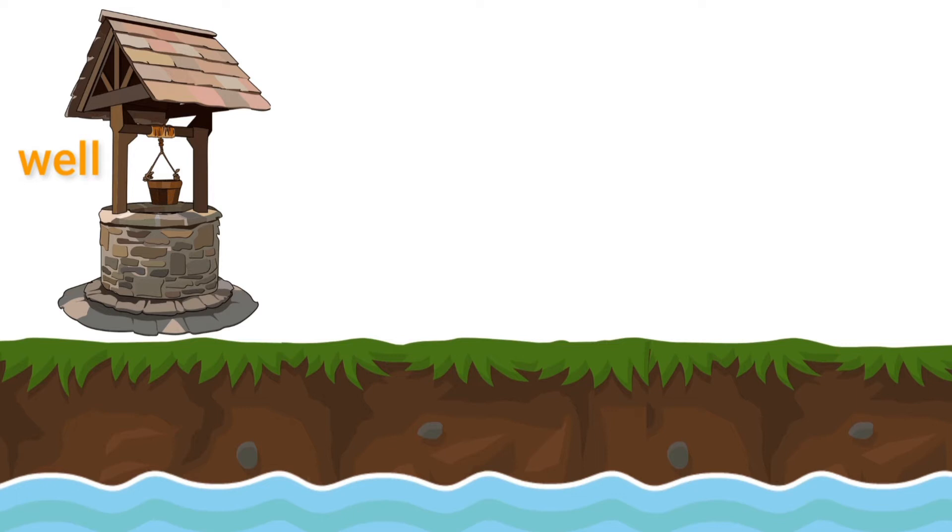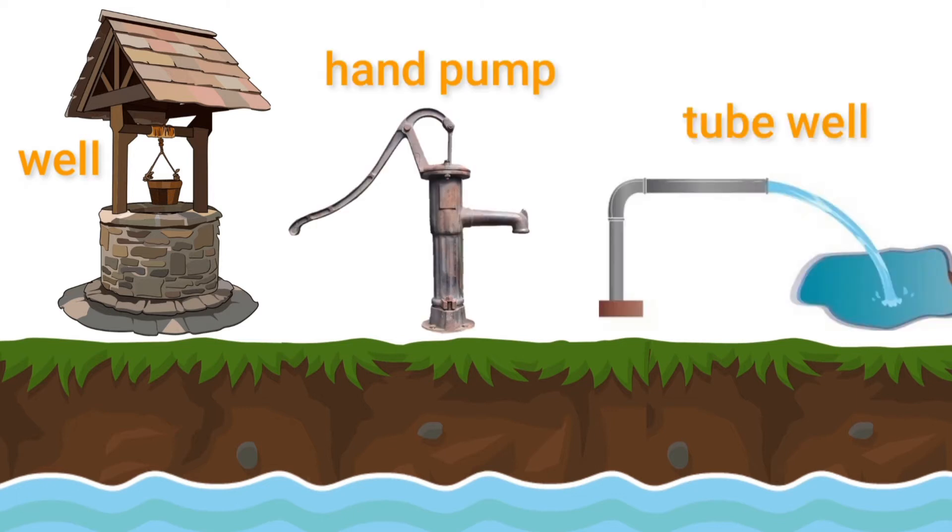We also build hand pumps and tube wells to get groundwater. Hand pumps are used in villages to get water. The tube well is mainly used for agricultural work.